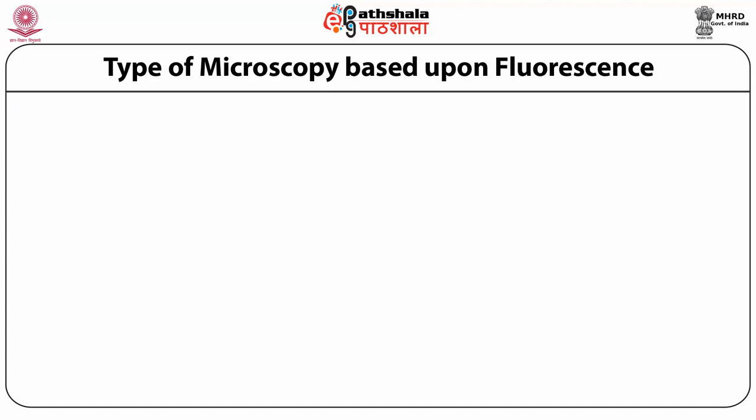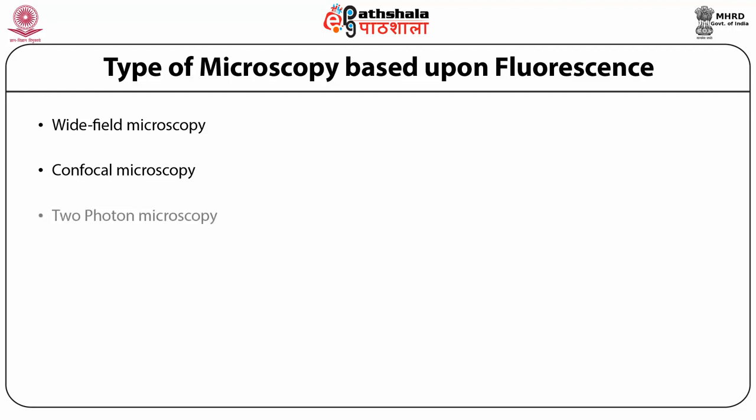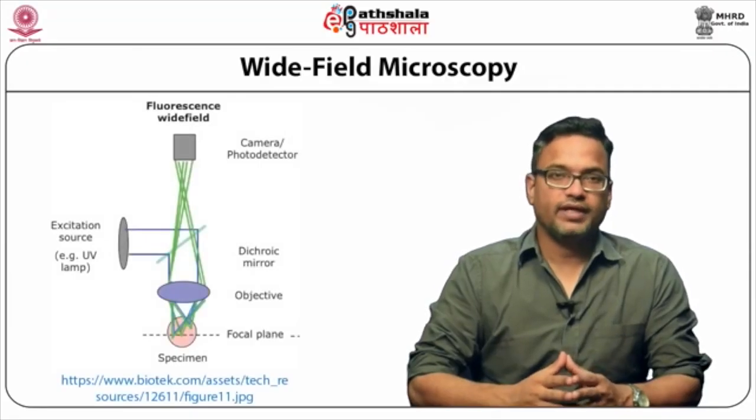There are three types of fluorescence-based microscopy: wide field microscopy, which captures a wider area; confocal microscopy, which uses a focused laser and pinhole for sharper images; and two-photon microscopy, in which just two photons are used to excite the fluorophore to obtain a high-resolution image.